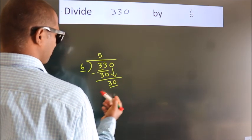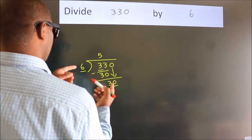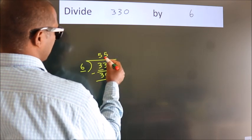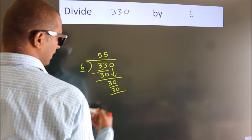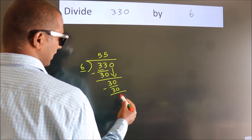So, 30. When do we get 30? In 6 table, 6 fives 30. Now, we subtract. We get 0.